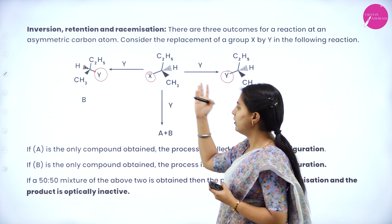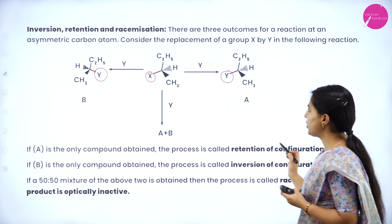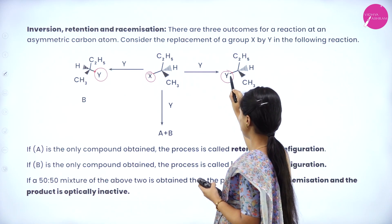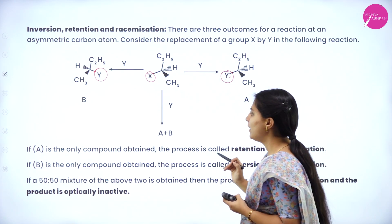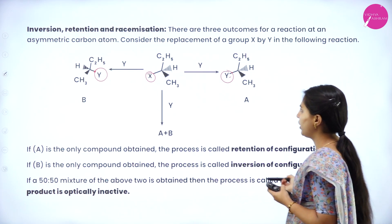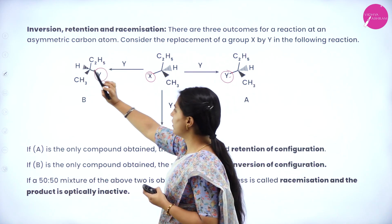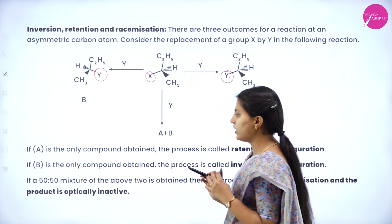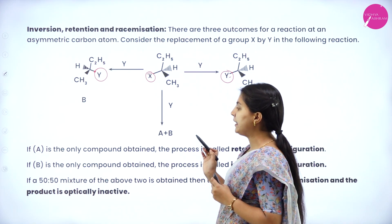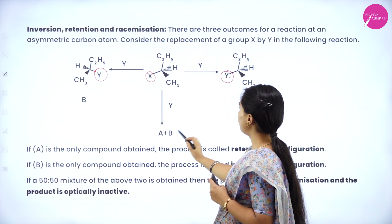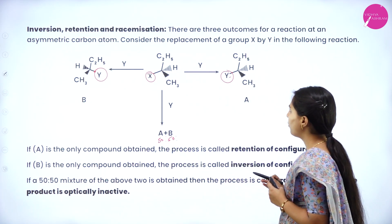If A is the only compound obtained, the process is called retention of configuration — the reactant and product have the same configuration. If B is the only compound obtained, the process is called inversion of configuration — H and C2H5 and CH3 groups are on opposite sides compared to the reactant. If a 50-50 percentage mixture of the above two is obtained, the process is called racemization, and the product is optically inactive.